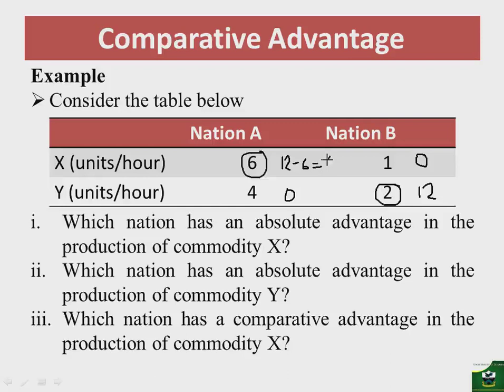Nation B is importing the six units of X from nation A, so we add six units, giving a total of six units of X for nation B. These are the consumption levels for nation A and nation B.